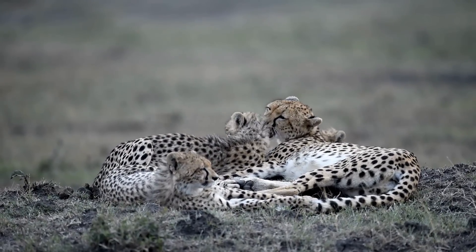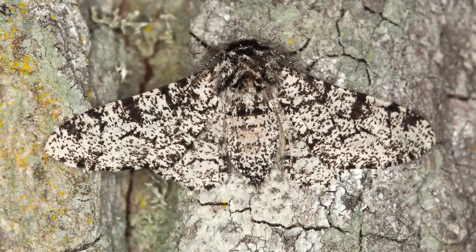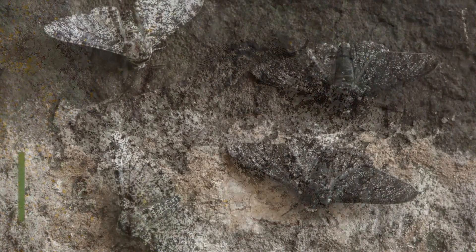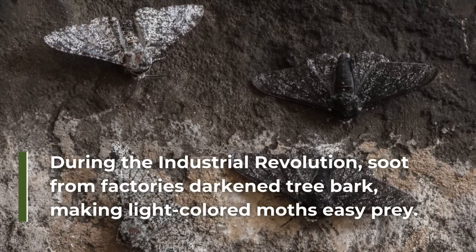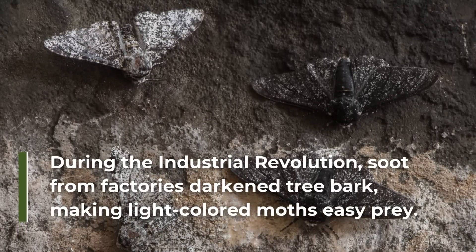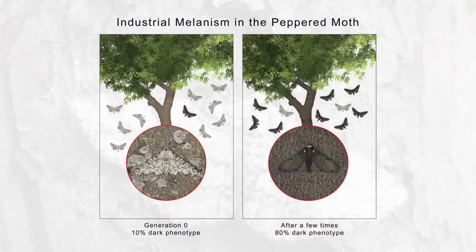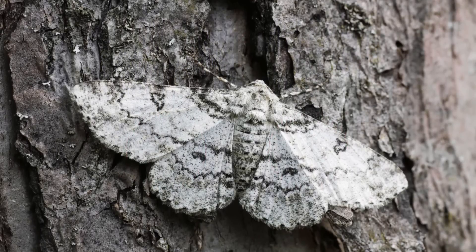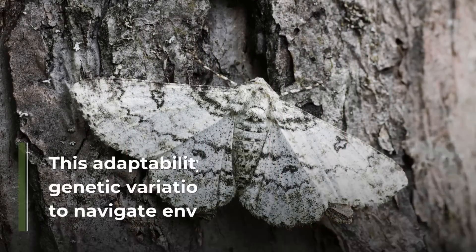In contrast, the peppered moth illustrates the power of genetic variation. During the Industrial Revolution, soot from factories darkened the bark of trees, making light-colored moths easy prey for predators. But some moths carried a gene for darker coloration, allowing them to blend into the soot-covered trees. These darker moths survived and reproduced, passing on their advantageous trait. When pollution levels dropped and trees regained their lighter bark, the balance shifted again, favoring the lighter moths.